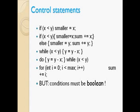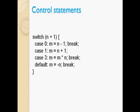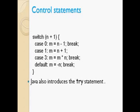Control statements in Java include the switch statement among others. Java also has exceptions - for example, dividing by zero throws an exception. We can simply put that exception-prone code in a try block and write a catch block to handle it.